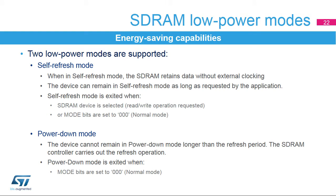For energy saving, the SDRAM controller can be configured in one of two low-power modes: self-refresh or power-down mode. In self-refresh mode, the SDRAM retains data without external clocking, and the device can remain in self-refresh mode as long as requested by the application. The device exits self-refresh mode when an SDRAM device is selected, a read/write operation is requested, or when mode bits are set to 0-0-0 (normal mode). The device cannot remain in power-down state longer than the refresh period, as no refresh operations are performed. The device exits power-down mode when mode bits are set to 0-0-0, normal mode.